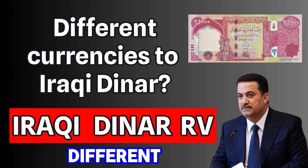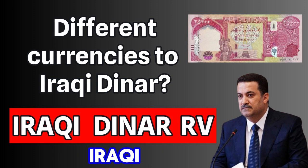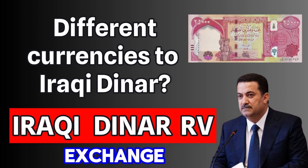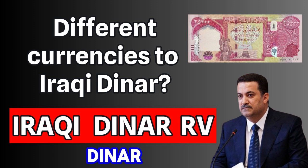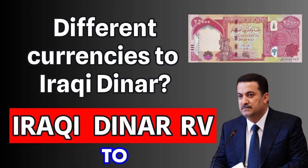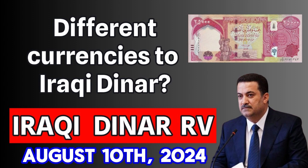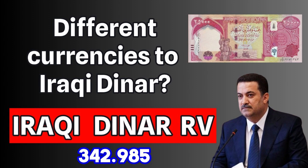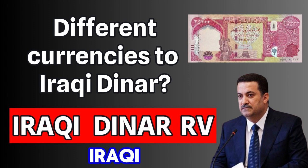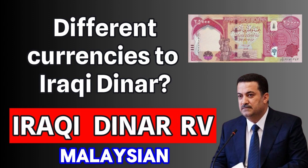What is the conversion rate of different currencies to Iraqi dinar? Exchange rate Malaysian ringgit to Iraqi dinar. The price of Malaysian ringgit to Iraqi dinar today, Saturday 10 August 2024, is equal to 342.985. That is, 1 Iraqi dinar is equal to 342.985 Malaysian ringgit.